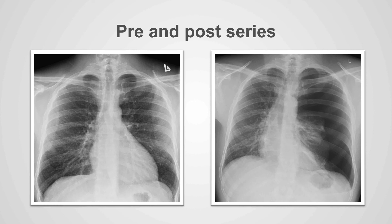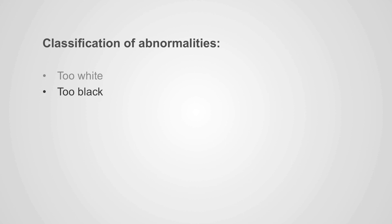In this case, we see that it is too black within this hemithorax as compared to the other x-ray, which is normal. The reason for that is because the patient has a pneumothorax. Because the heart and mediastinal structures are shifted to the right, this is classified as a tension pneumothorax. So in recap, the abnormalities within the thorax can be classified as too white or too black. Pathology can also be both too black and too white, which will be explained in a future video.